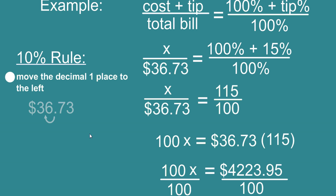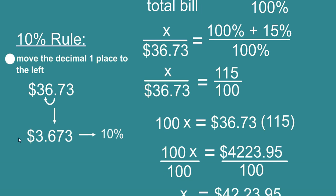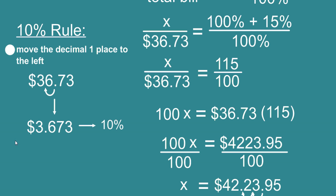So this is the cost of my meal, $36.73. I move the decimal one place to the left and it gives me 10%. Now if I'm leaving a 15% tip then I can figure out the other 5% by taking this number which is 10% and dividing it by two. I get $1.84.